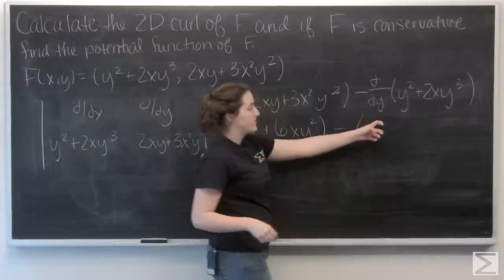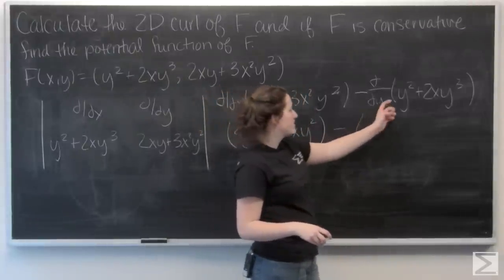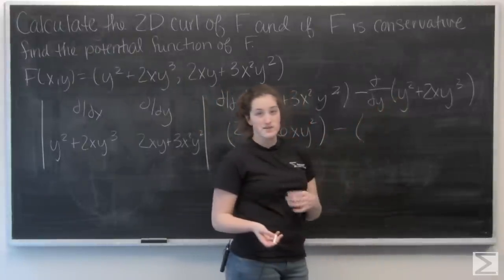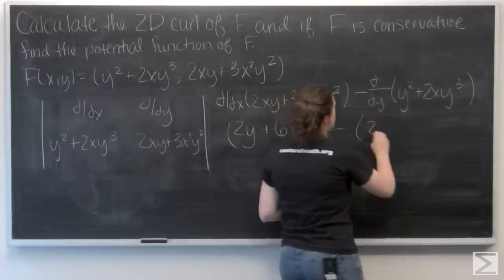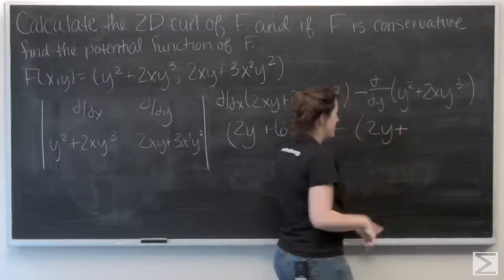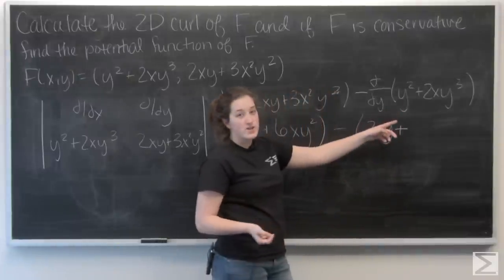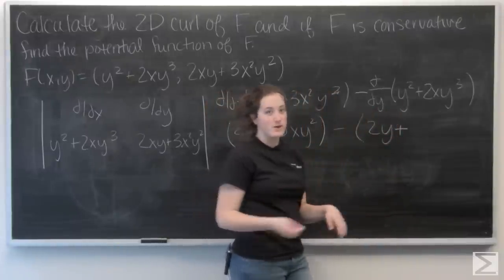Now let's do the second component. The partial derivative of y squared with respect to y is going to be 2y, and the partial derivative of 2xy cubed with respect to y is going to be 6xy squared.